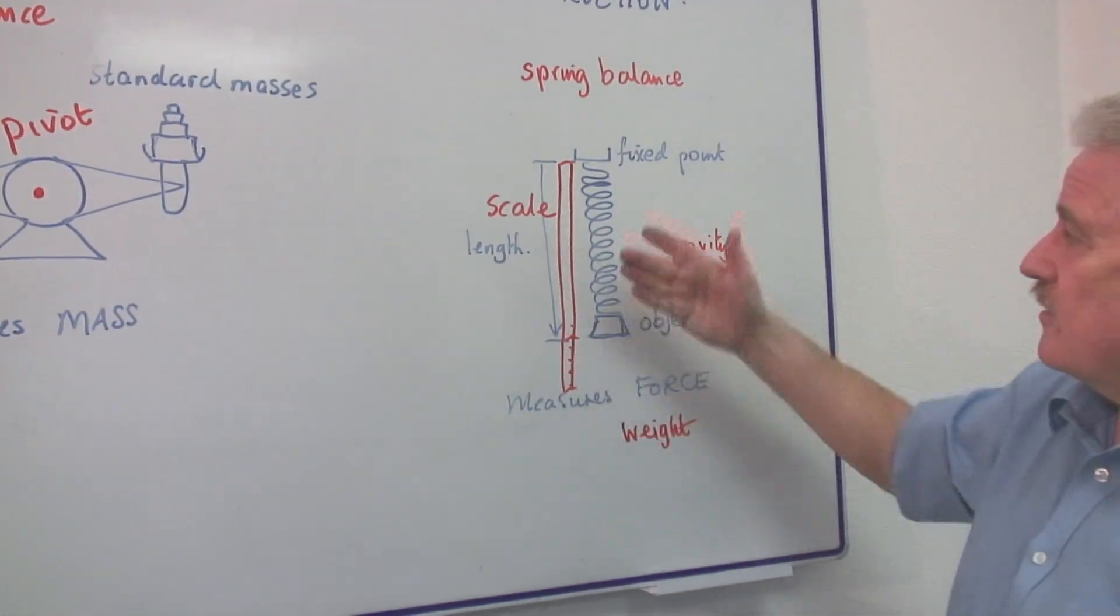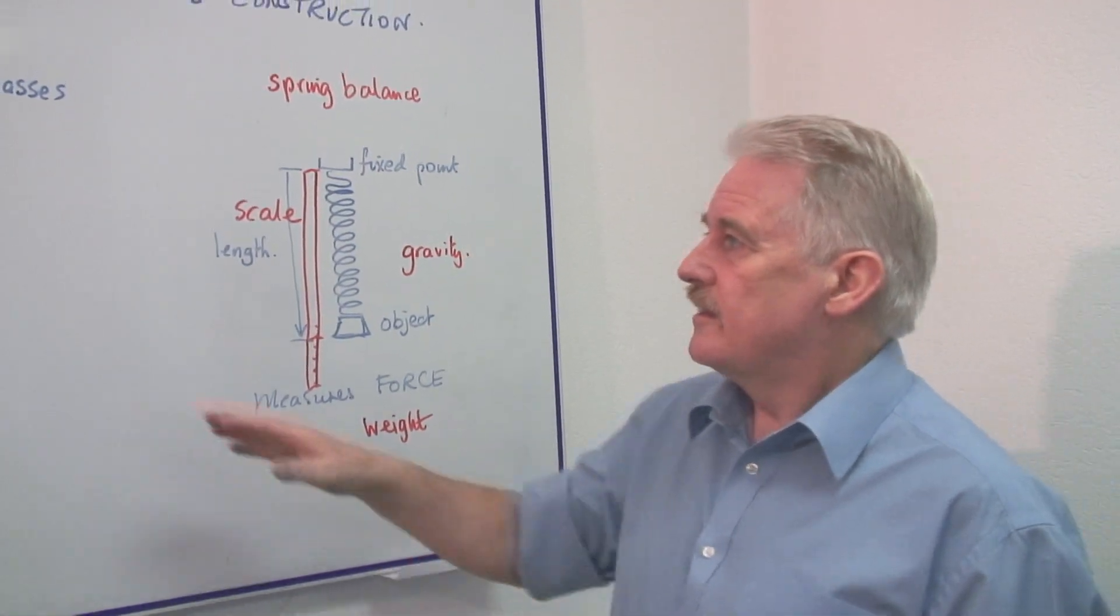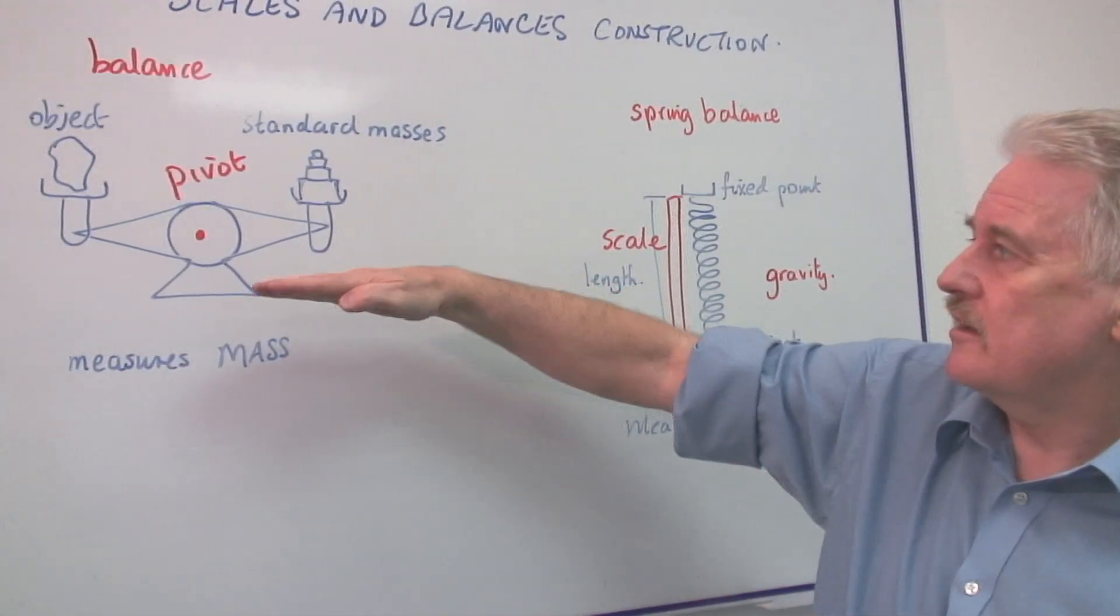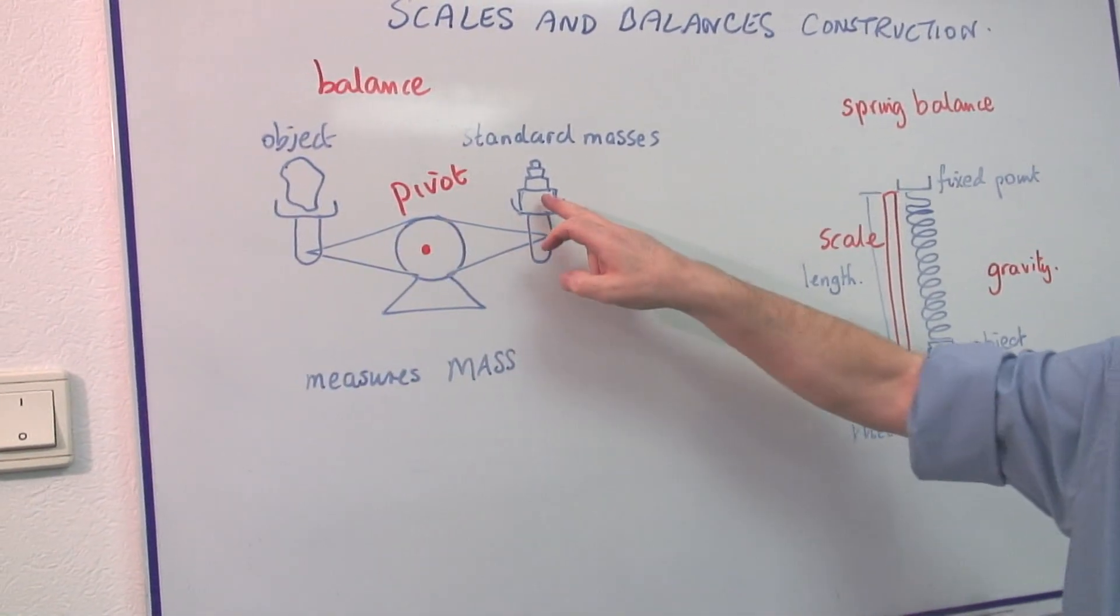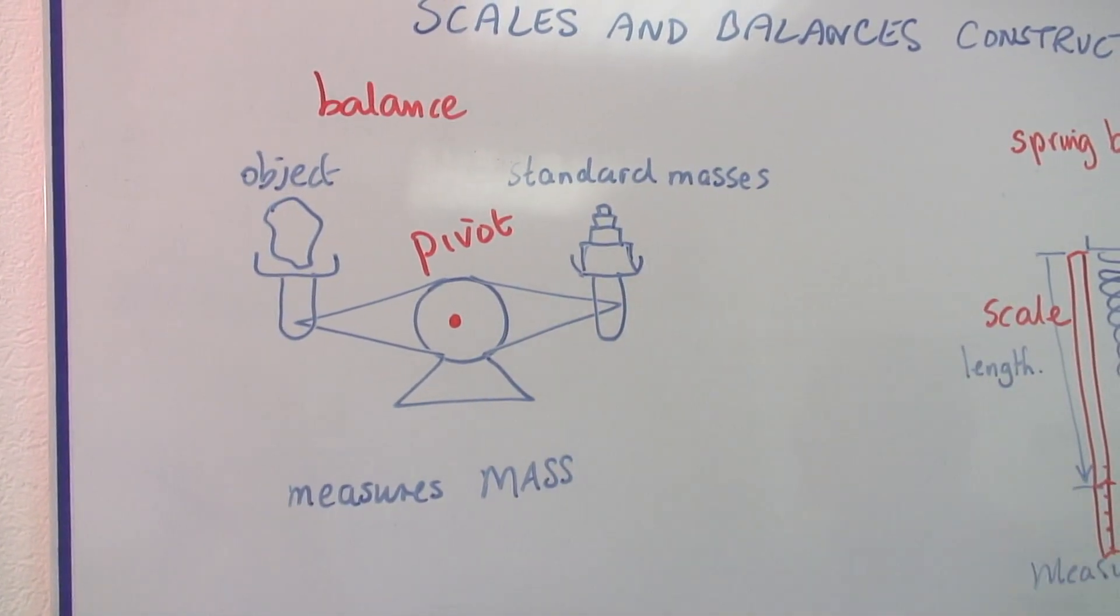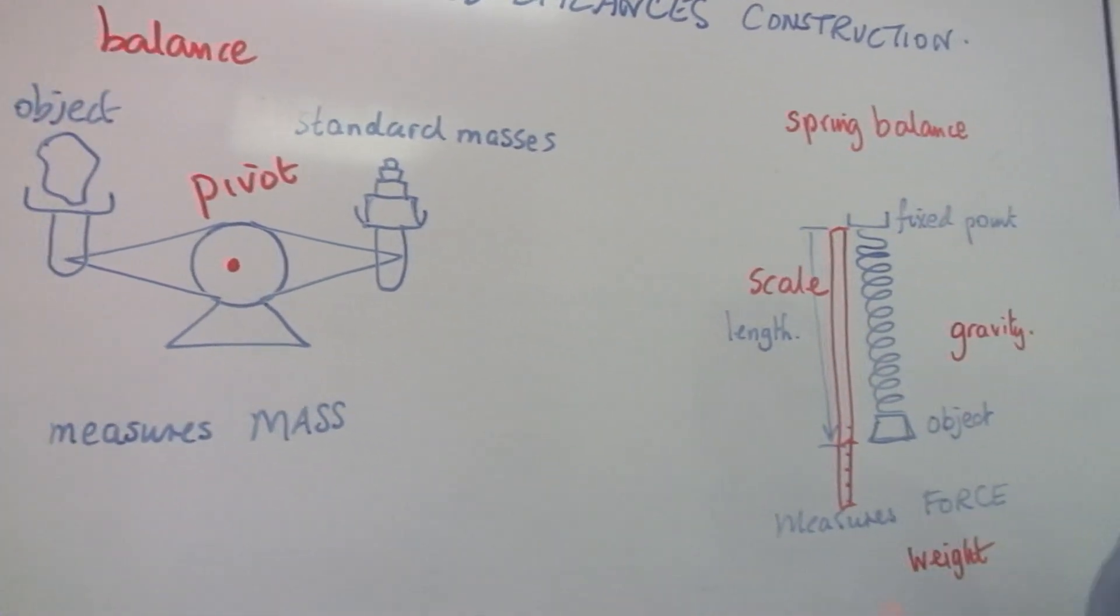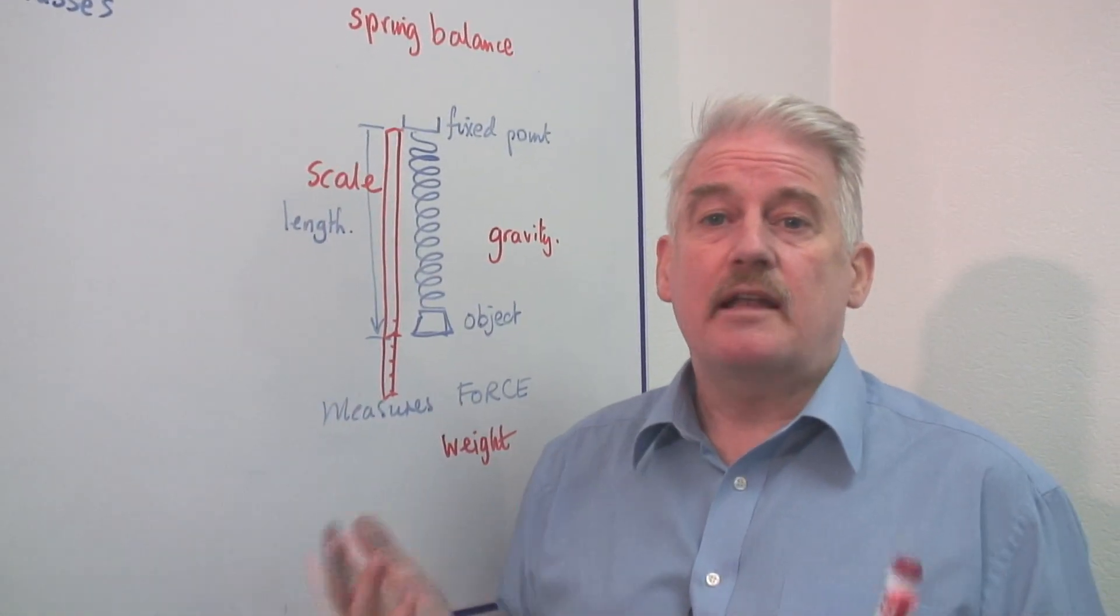This scale simply is something getting longer, shows you that there is more weight. This is a balancing situation where we balance an object against some standard object which we know the weight of. So that is basically and simply how scales and balances are constructed.